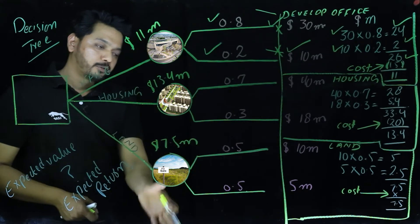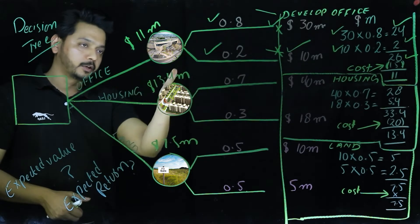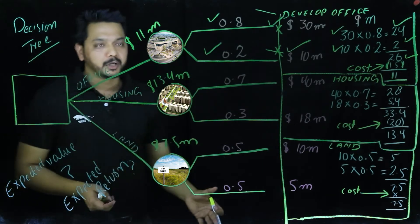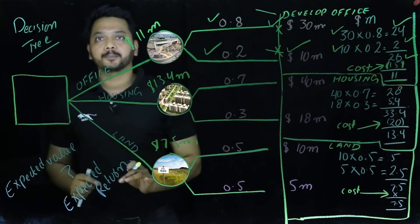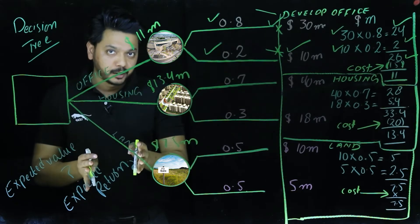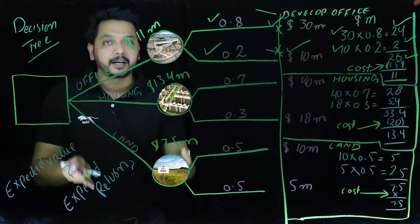We got three figures here: 11 million, 13.4 million, and 7.5 million. It is quite evident now, it is quite easy to understand that when it comes to quantitative decision making, now we need to differentiate here. I am talking about quantitative decision making.